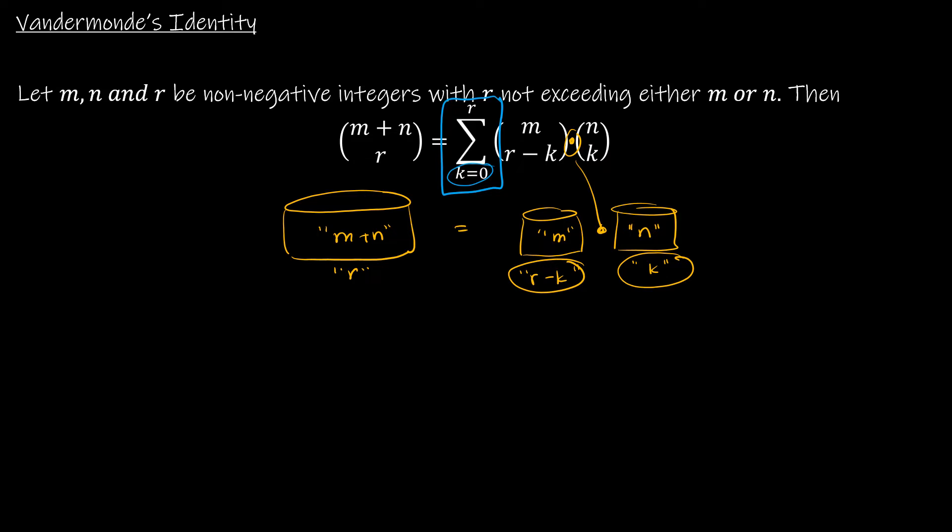And that's where these indices come in. So if k is zero, essentially I'm saying I'm not going to choose any from the n pool, and then I'm going to choose all of r from the m pool. Okay, and then what if k is one? Well, if k is one, I'm going to choose one from here, and I'm going to choose r minus one from here.